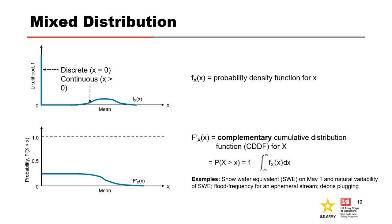Here is an example of a mixed distribution — it is discrete where x equals zero and continuous where x is greater than zero. The plot at the bottom shows the complementary CDF. Examples of mixed distributions include snow water equivalent on a given day, flood frequency for an ephemeral stream, and debris plugging. The mean shown here is the mean of the continuous part of the distribution — it is the mean when x is greater than zero.